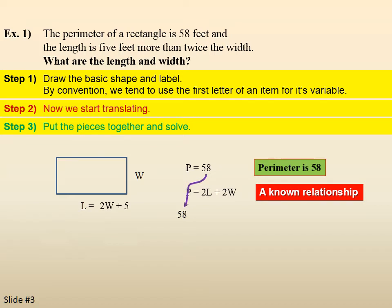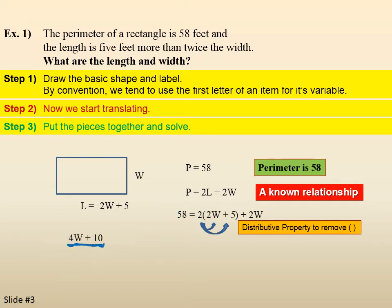Well, we know that the P stands for perimeter, which is 58. And we have a name for L, which was 2W plus 5. So, we'll put that in. So, now we have P equals 2 times 2W plus 5 plus 2W. Now, we'll remove these parentheses with the distributive property. 2 times 2W is 4W, and 2 times 5 is 10. Bring the rest of the problem over.